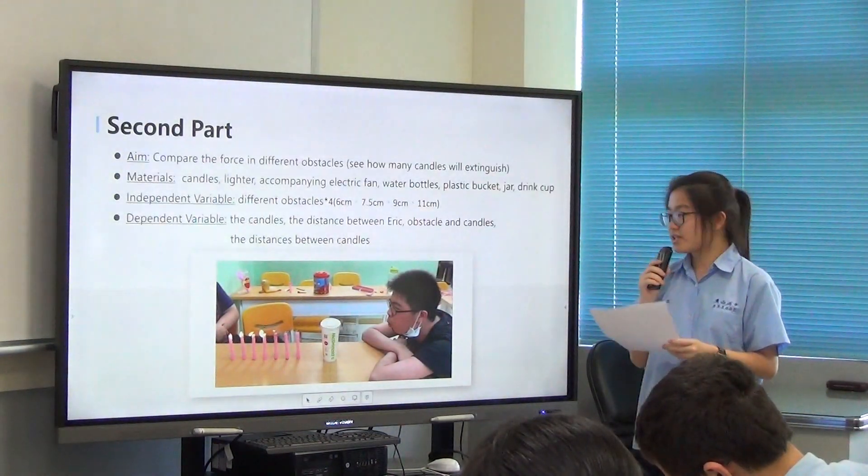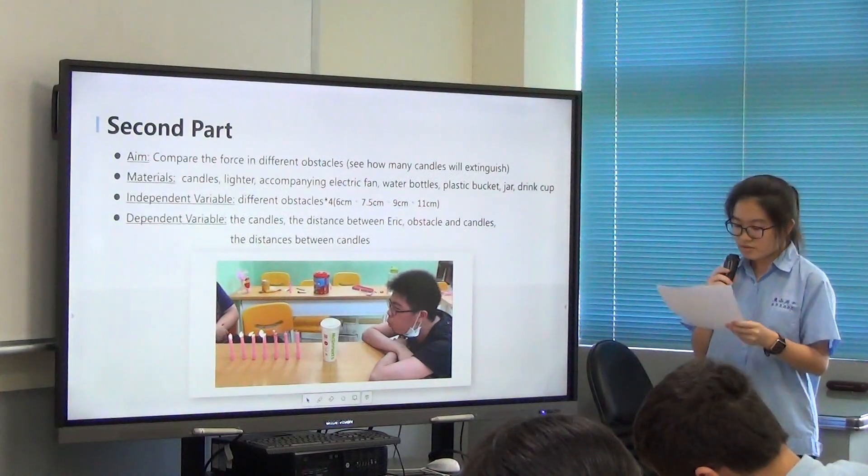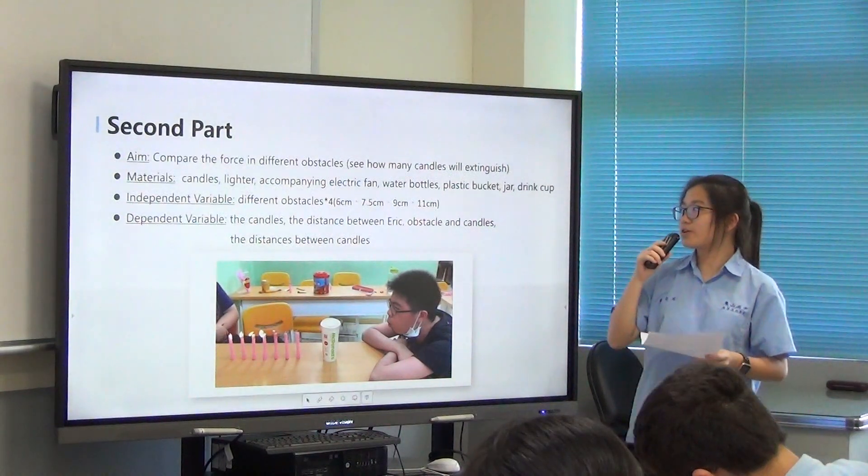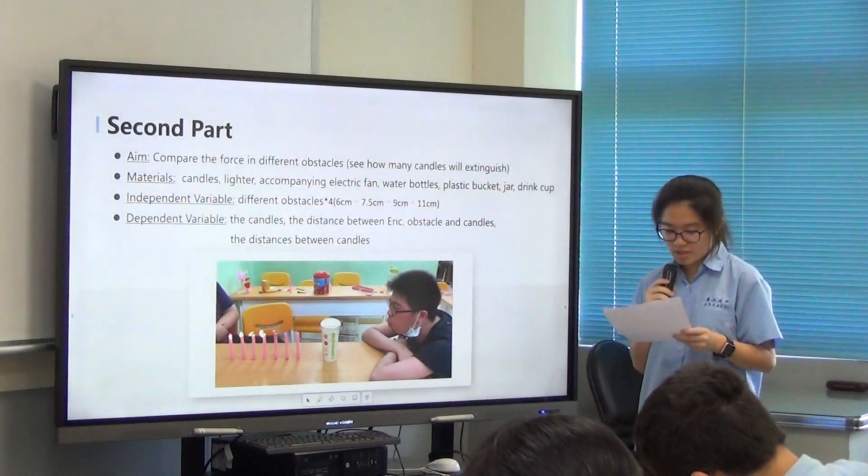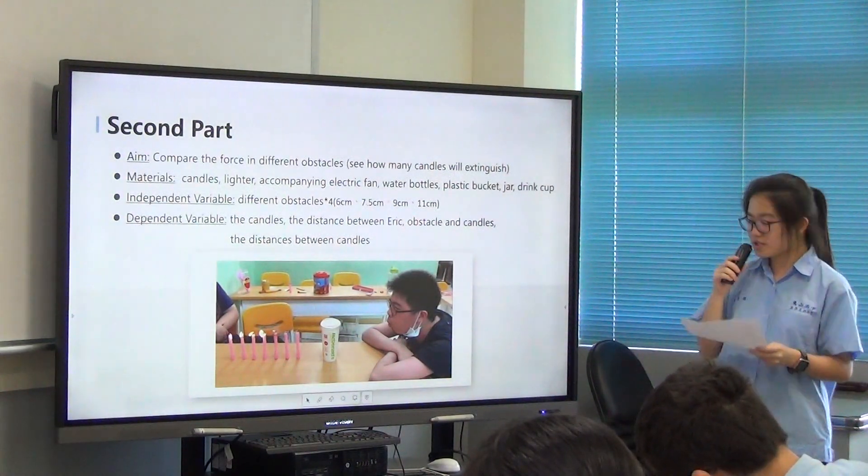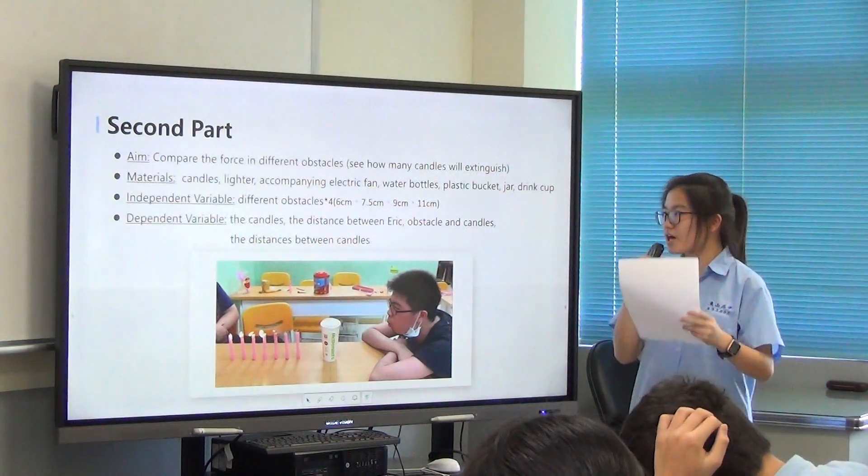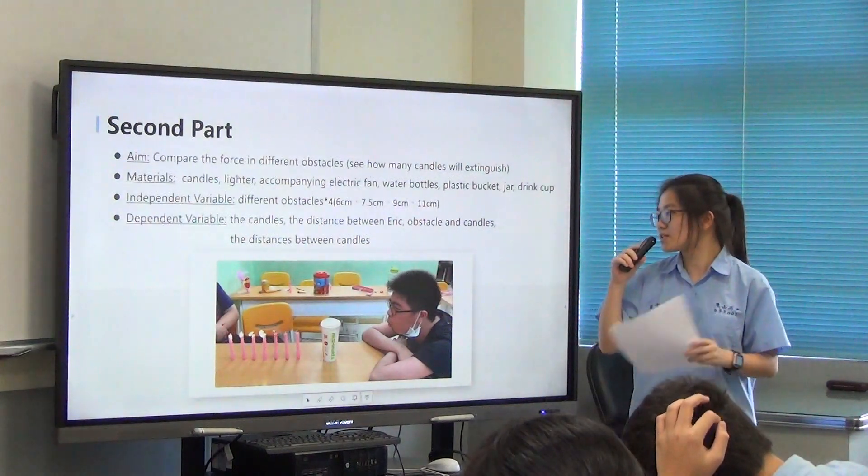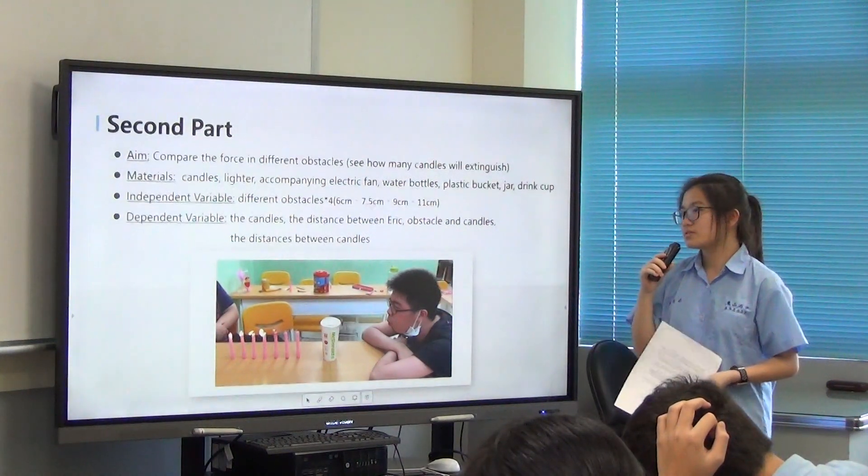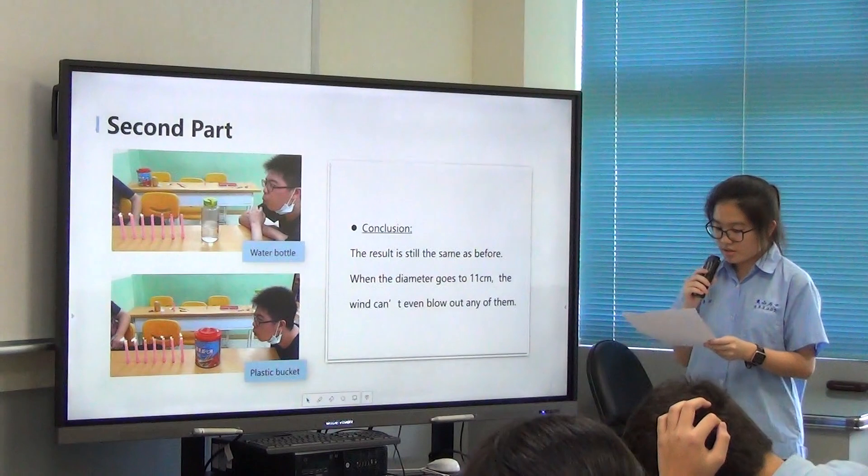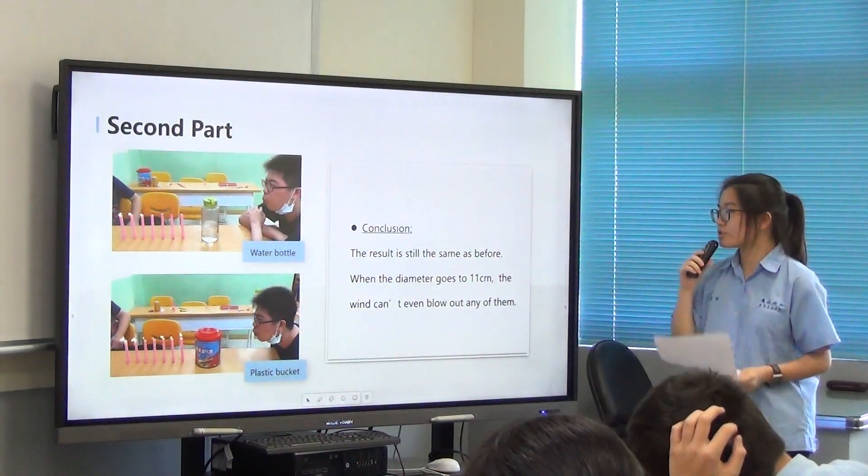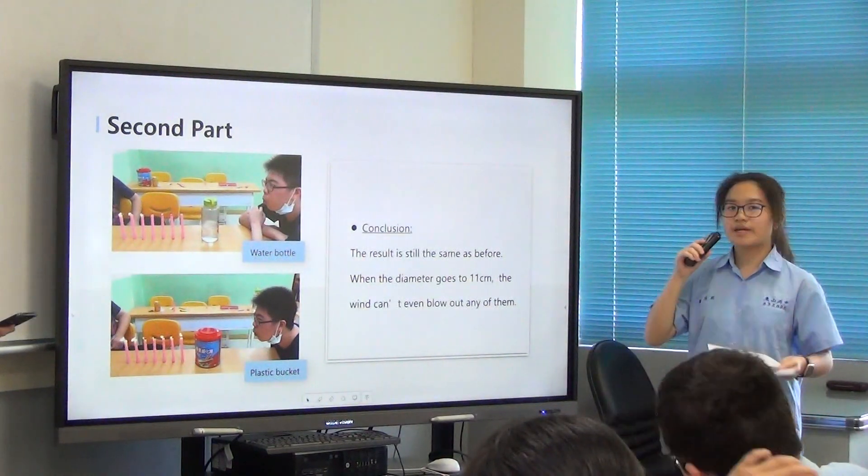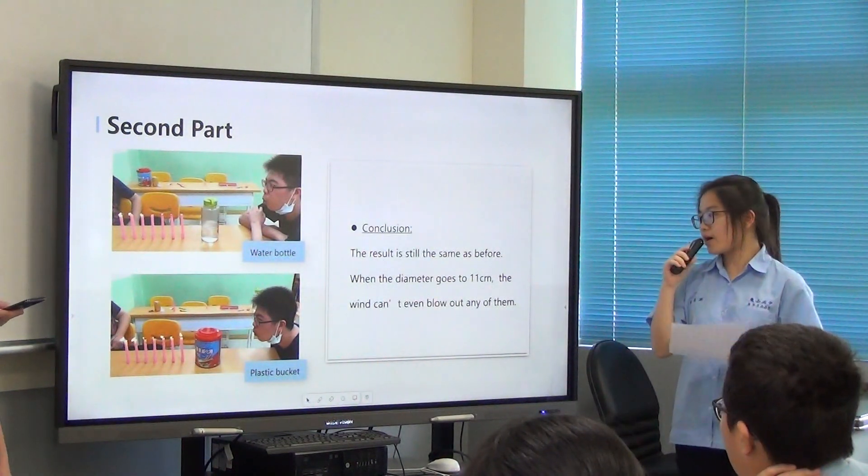For the second part, we used another way to compare. This time, we want to see how strong the wind is, so we want to see how many candles were extinguished. Same materials and independent variables, but we add another requirement to dependent variables, which is the distance between candles. We got the same result. According to our experiment, when the diameter goes to 11 centimeters, we can't even blow any of them out.